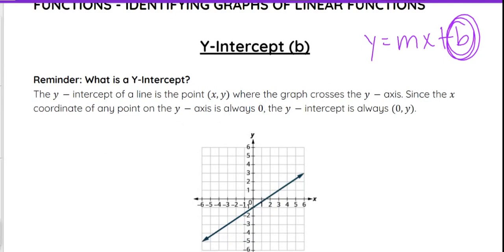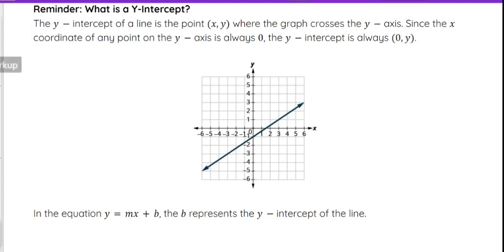As a reminder, y-intercepts are the point or points that intersect the y-axis when you're looking at a graph. For a line, there's only going to be one y-intercept. It is a function, there's only one spot where it crosses that y-axis.